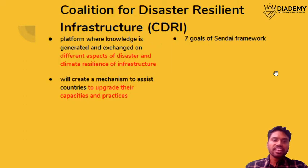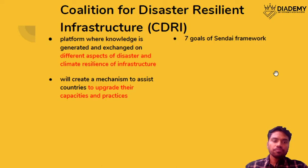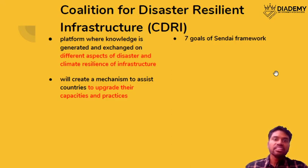The first topic is the Coalition for Disaster Resilient Infrastructure. This is a platform where knowledge is generally exchanged on how to deal with climate-resilient infrastructure. The frequency of disasters has increased because of climate change over the past many years, so unique resilient infrastructure is needed for the future. Such information is exchanged by this coalition, which creates a mechanism to assist countries to upgrade their capacities and best practices.